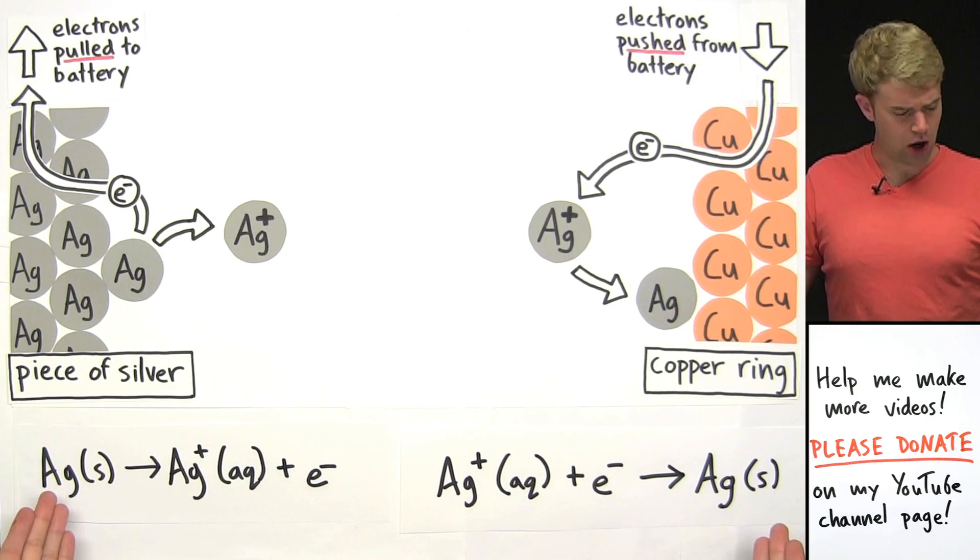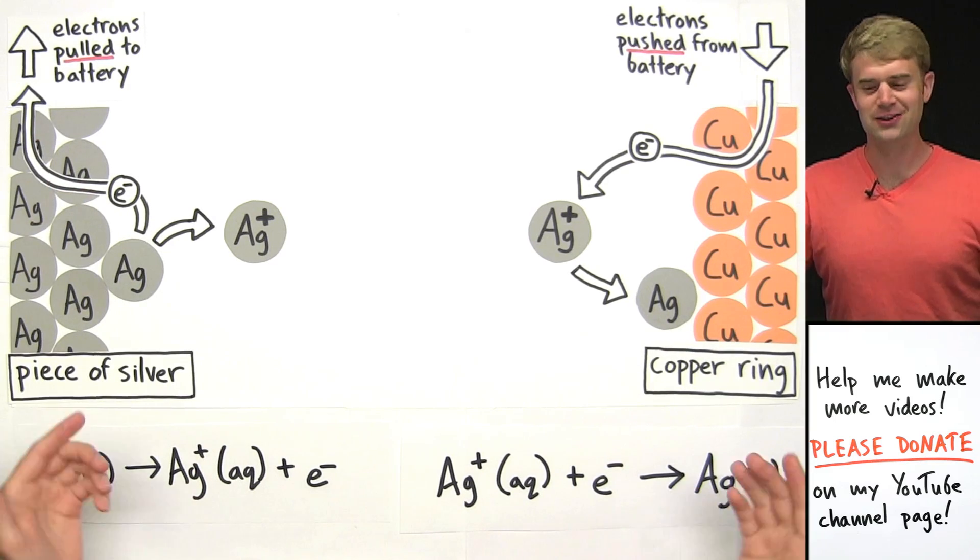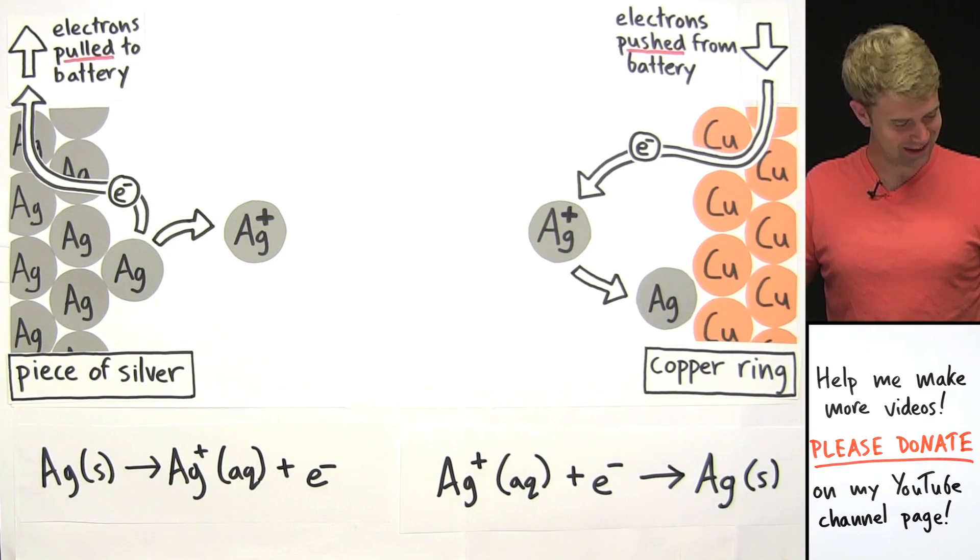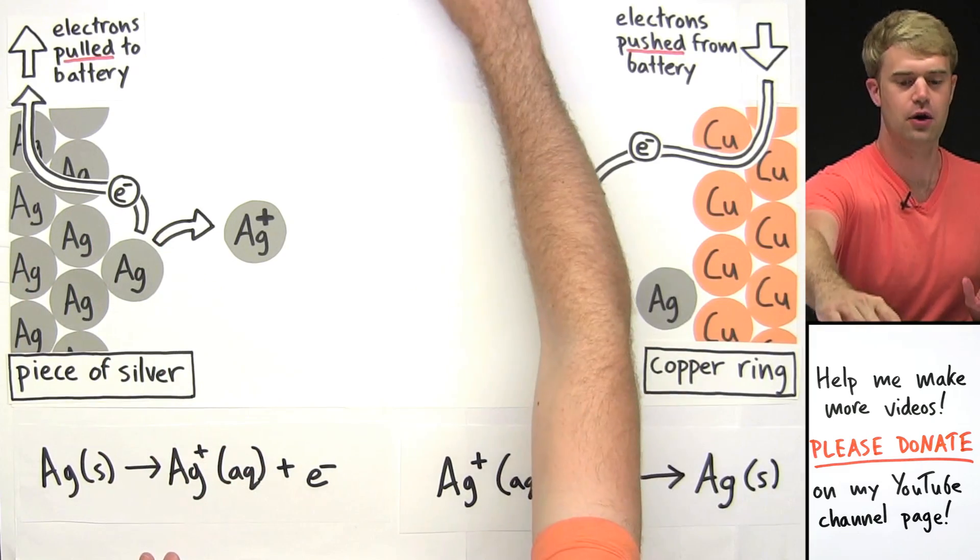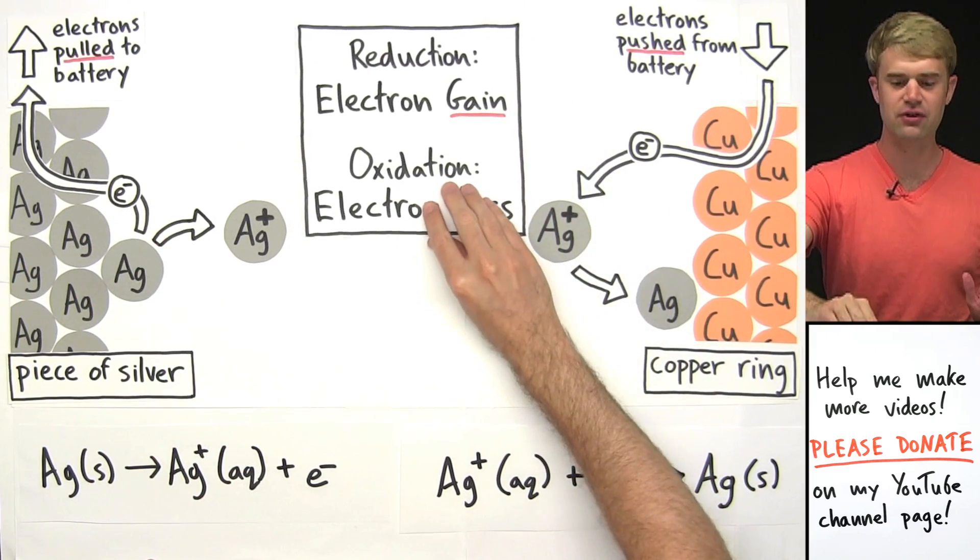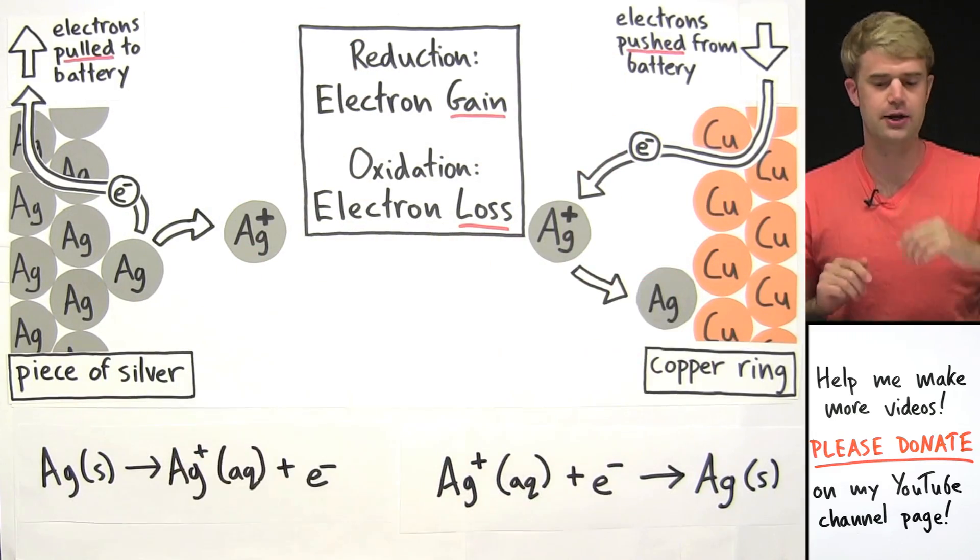So these are the two equations for what's happening here. Now you can look at the diagrams, or you can look at the equations here, and you can definitely tell that there is transfer of electrons going on. So this is definitely an oxidation-reduction process, because there's transfer of electrons.